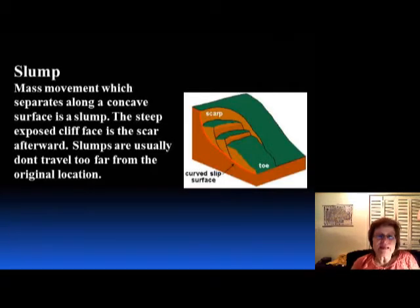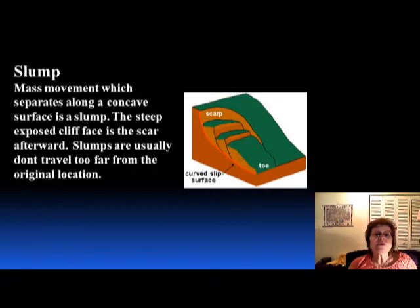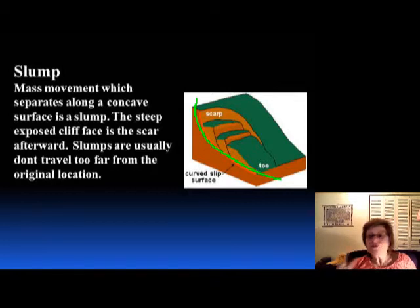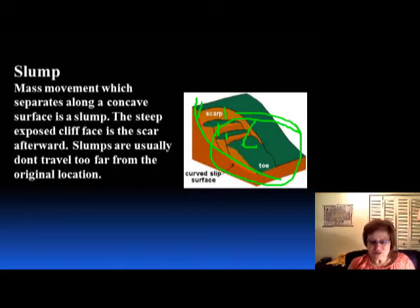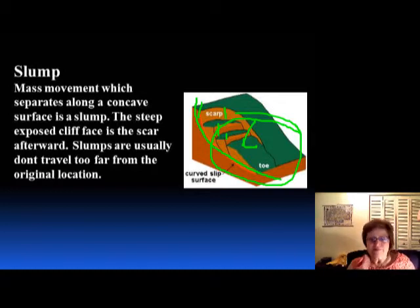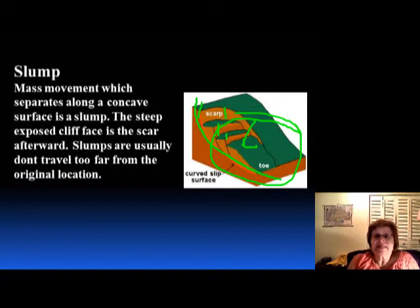The most common one, especially in our area, is the slump. Slumping usually happens in unconsolidated sediments such as soil. The most important thing is that slumping happens along a concave-up curved surface. There will be two things to recognize: one is the scarp — the area where the movement started — and the other is where the material rests, which is called the toe. Usually slumps do not travel far; they stop at the bottom of the slope.